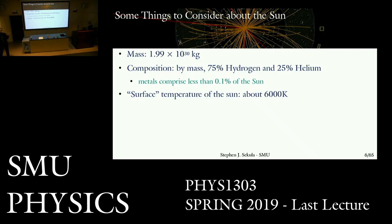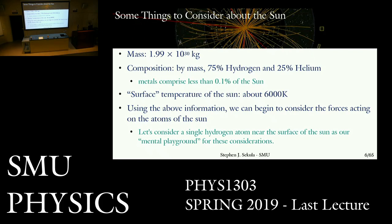The closest planetary body in the solar system is Mercury, a rocky planet like ours but much smaller. Using this information, we can begin to consider the forces acting on atoms in the sun. One of those forces we've explored a lot this semester is gravity, so we'll start with that. We're going to take a tour down into the atom to look at some of the other forces at play in the sun, some of which you won't get into until Physics 2, and some not until Physics 3. Let's consider a single hydrogen atom very near the surface of the sun as our mental playground.